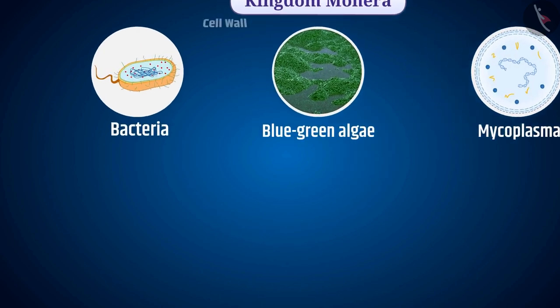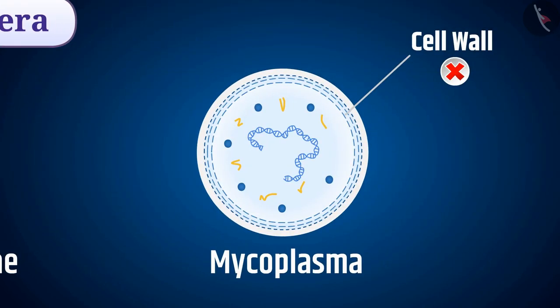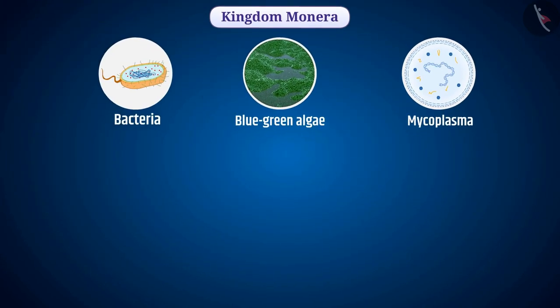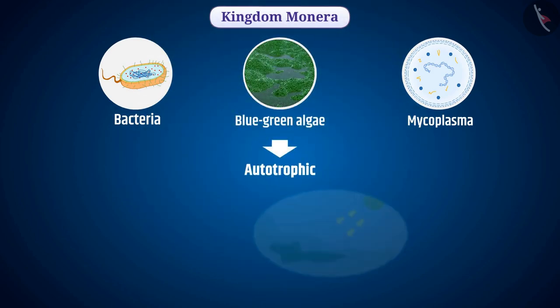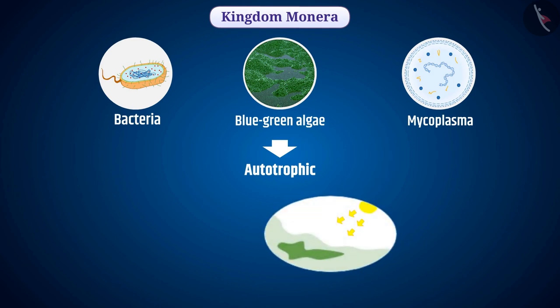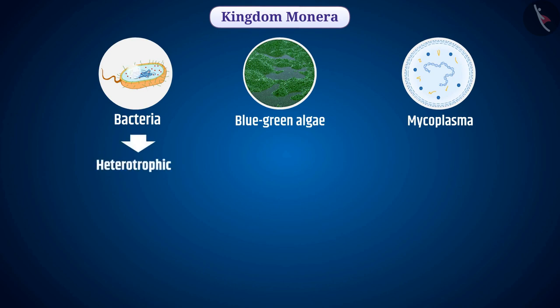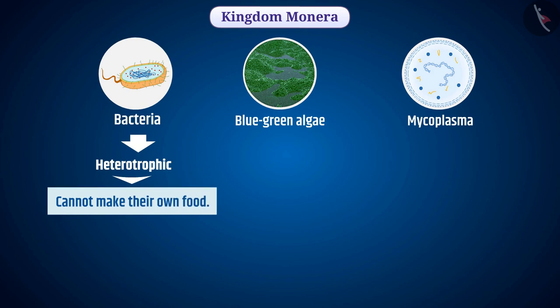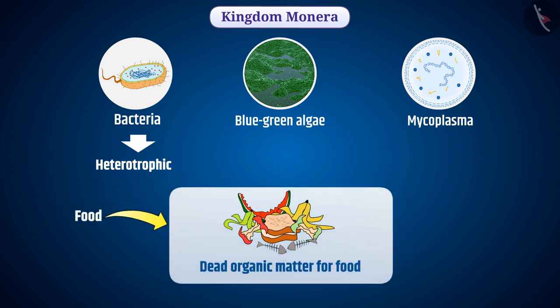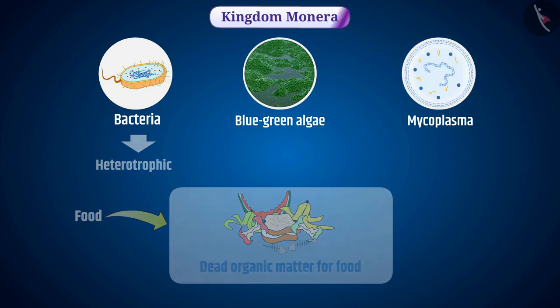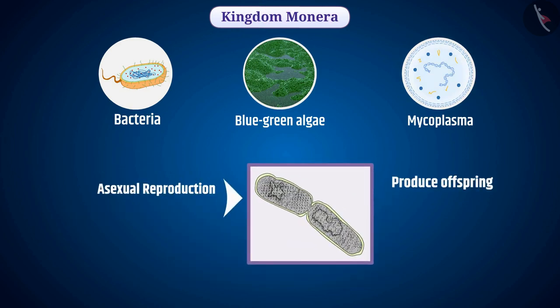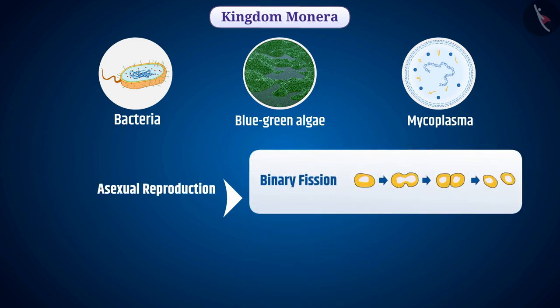Some of these organisms have cell walls and some do not. Some creatures like blue-green algae are autotrophic, i.e., they can make their own food by the process of photosynthesis, and some organisms like bacteria are heterotrophic, i.e., they cannot make their own food — they depend on other living organisms and dead organic matter for food. Organisms of the Monera Kingdom produce offspring through asexual reproduction, mainly by binary fission and budding.